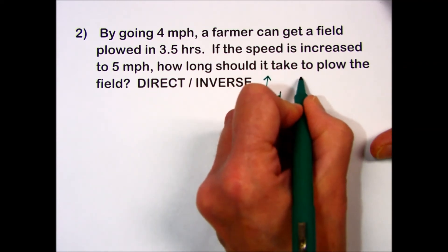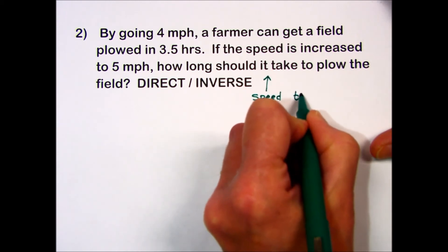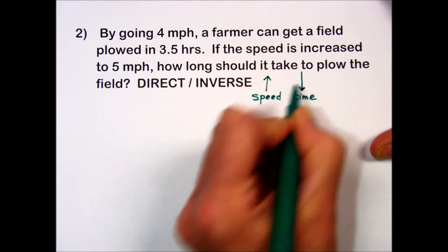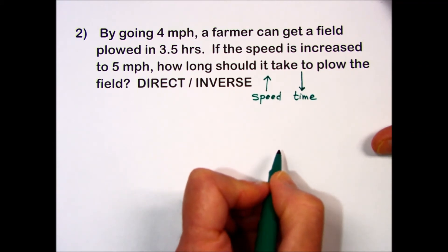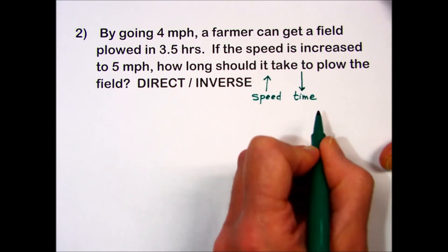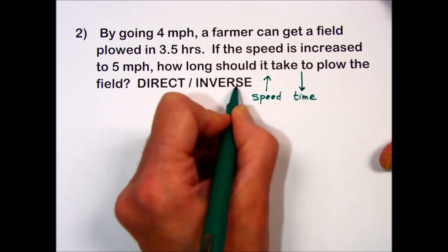Experience should tell us when we're talking about the time to get a job done, the time will decrease if our speed is increased. When we have an increase in one quantity and a decrease in the other, we have an inverse relationship.